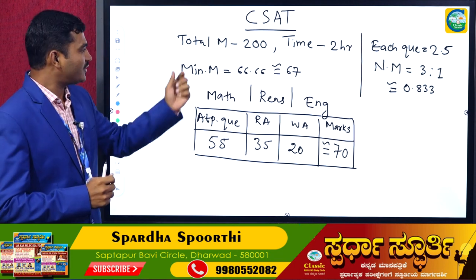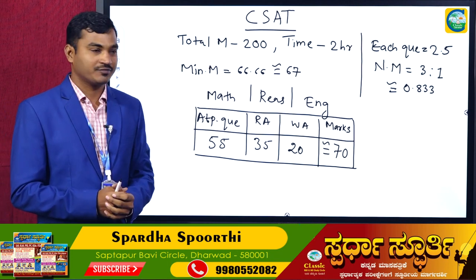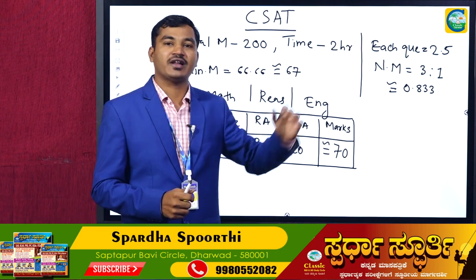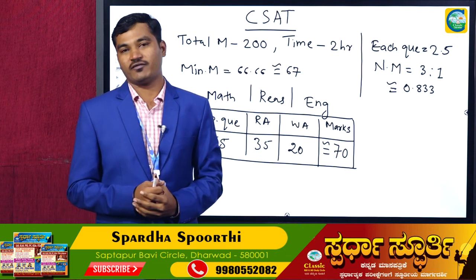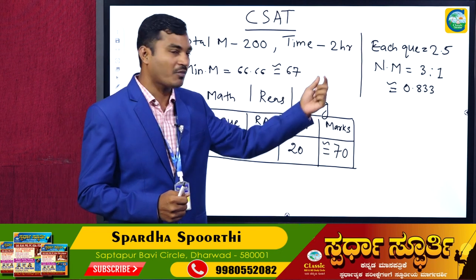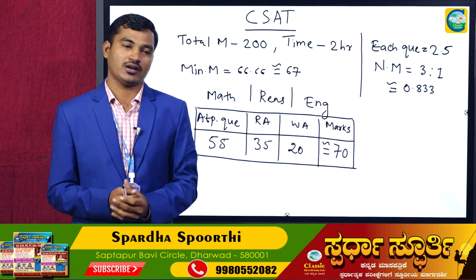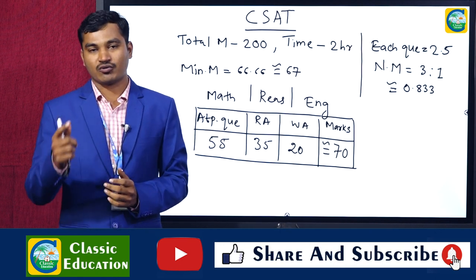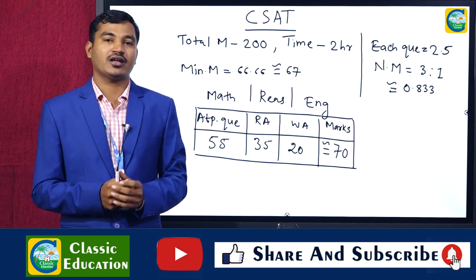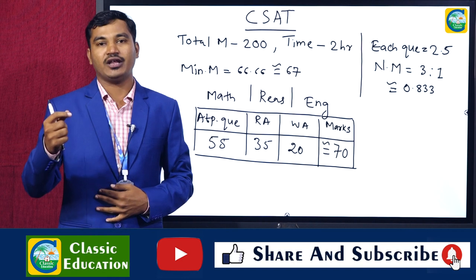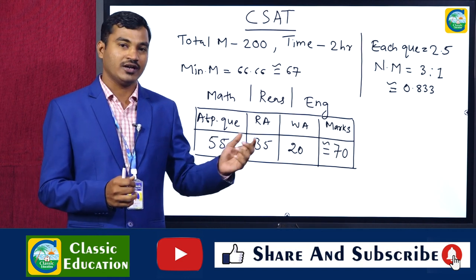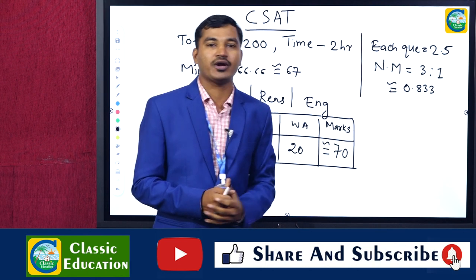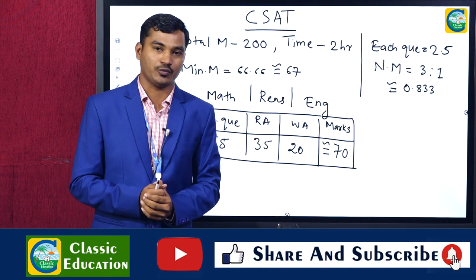This exam is of 200 marks, we have two hours of time, and each question will have 2.5 marks. There is negative marking in the ratio 3 is to 1. That means if you make three questions wrong and one question correct, whatever marks you gained in that one correct question will be lost. That is 0.833 is the negative.